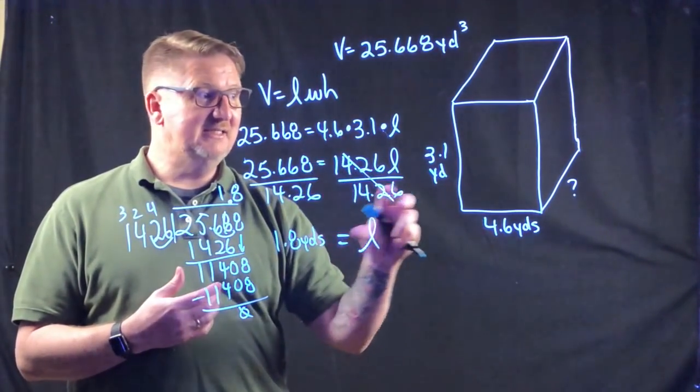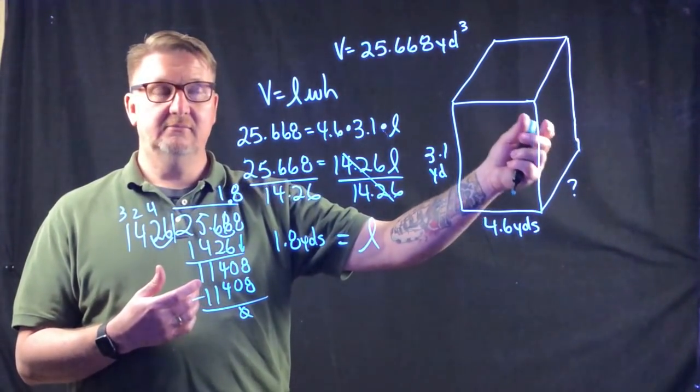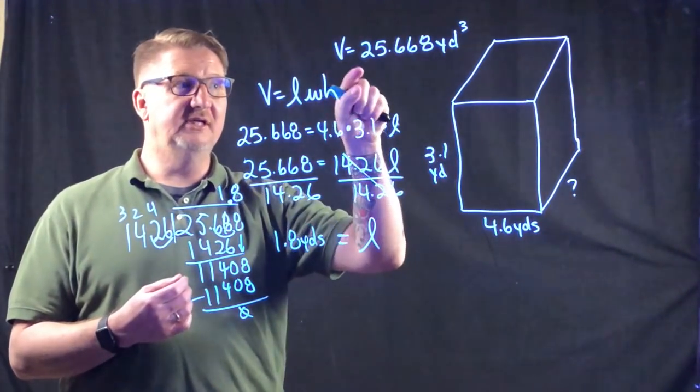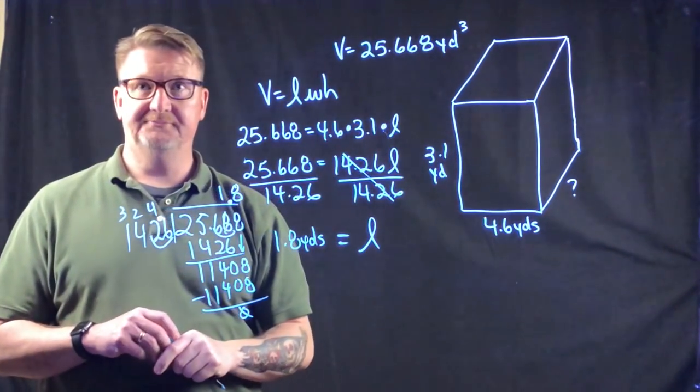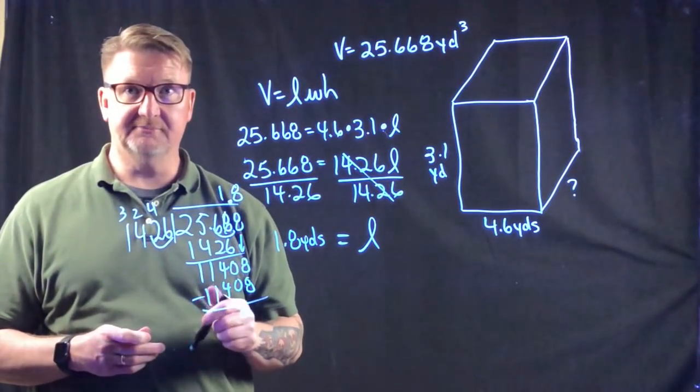The answer is 1.8 yards. That's all there is to finding a missing length when you're given the volume of a rectangular prism.